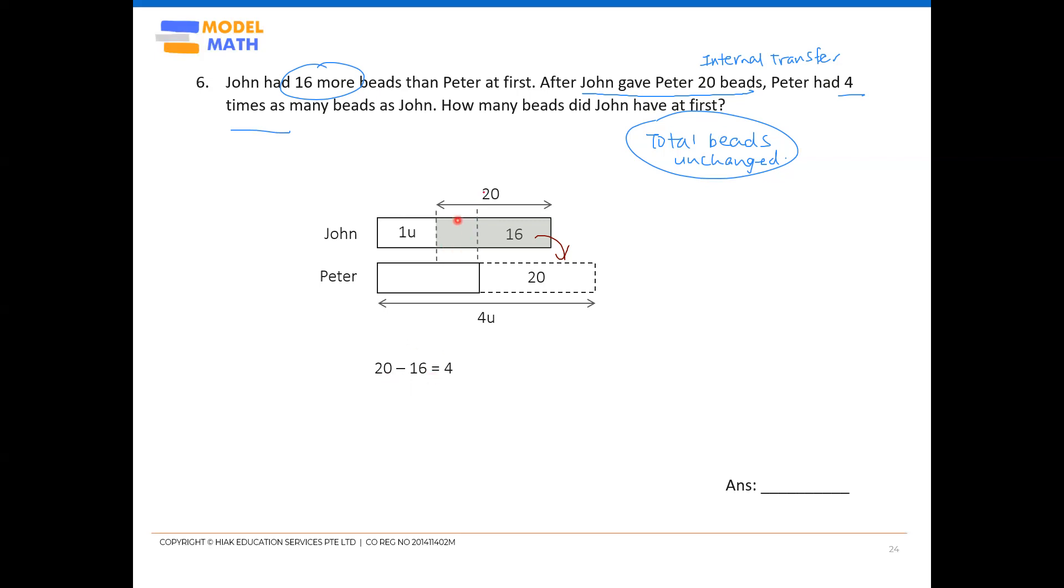Now, 20 minus 16. So why are we doing this? This is because we want to find out this part. So the three units, I'll talk about it later first. We follow this first. 20 minus 16. Your four will be over here. So this is your four. You can even bring down this four. So this is where your three units comes in. 4U minus 1U. So this is your three units.